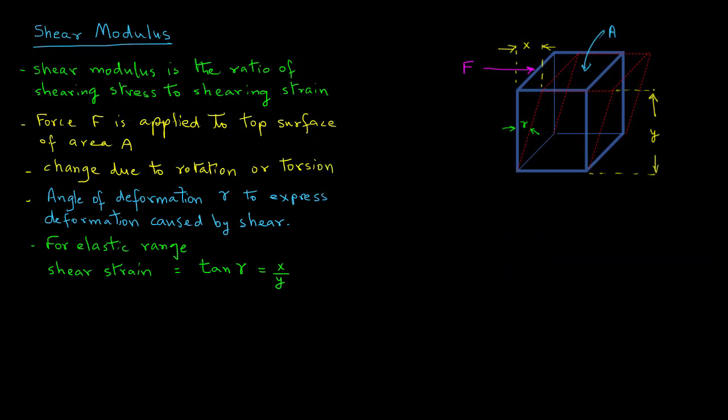The shear stress on this object can be expressed with the symbol tau, a Greek letter tau, that equals the force F divided by the area of the top surface A.